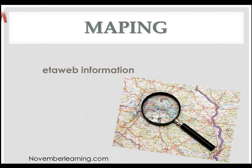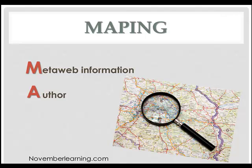The three components of mapping are M — metaweb information — A — author — and P — purpose. The metaweb information is the information contained in the URL address. So that www.whatever, that's what you're looking for when you look at the metaweb information.